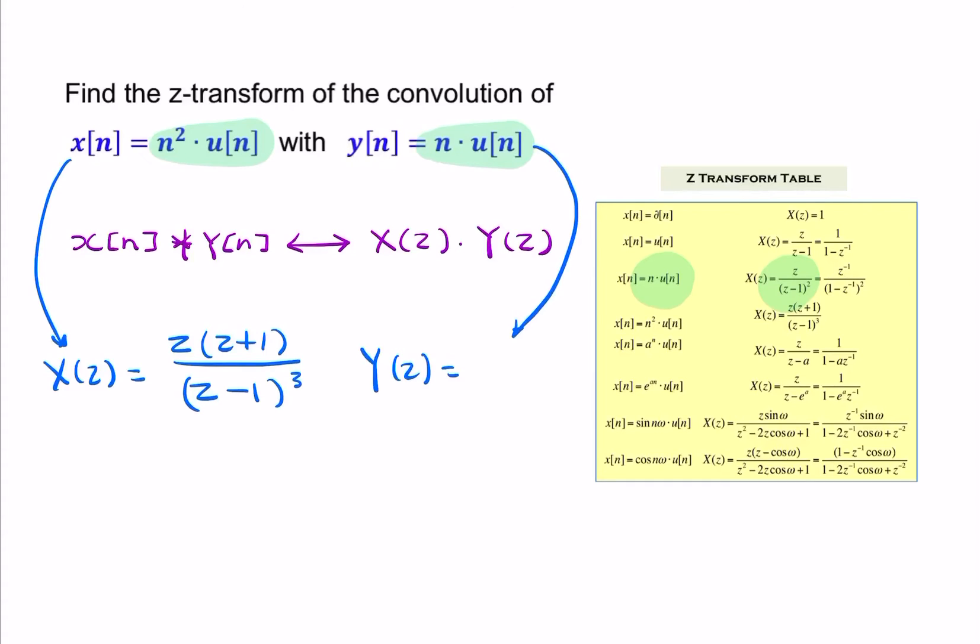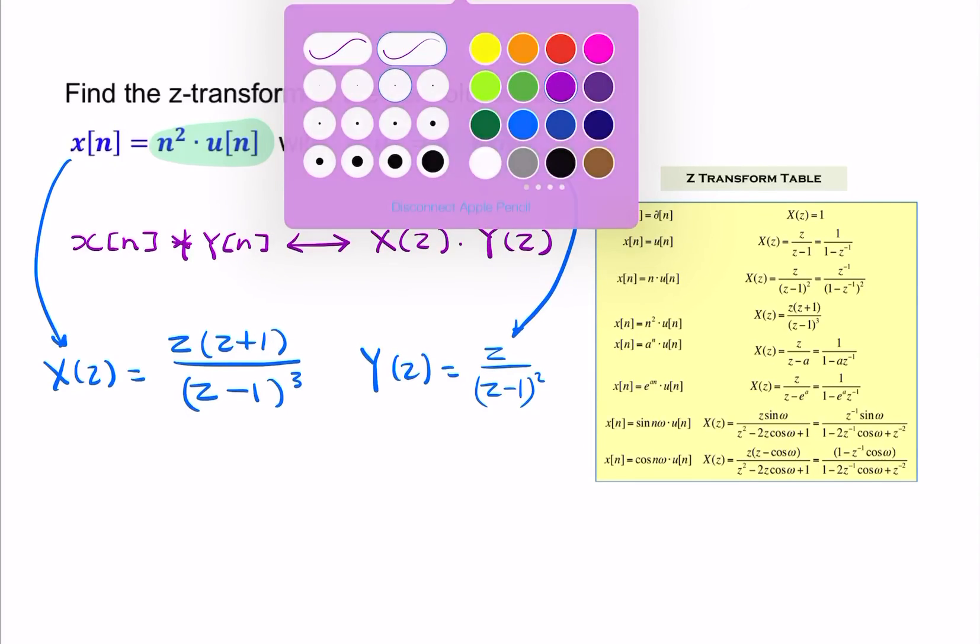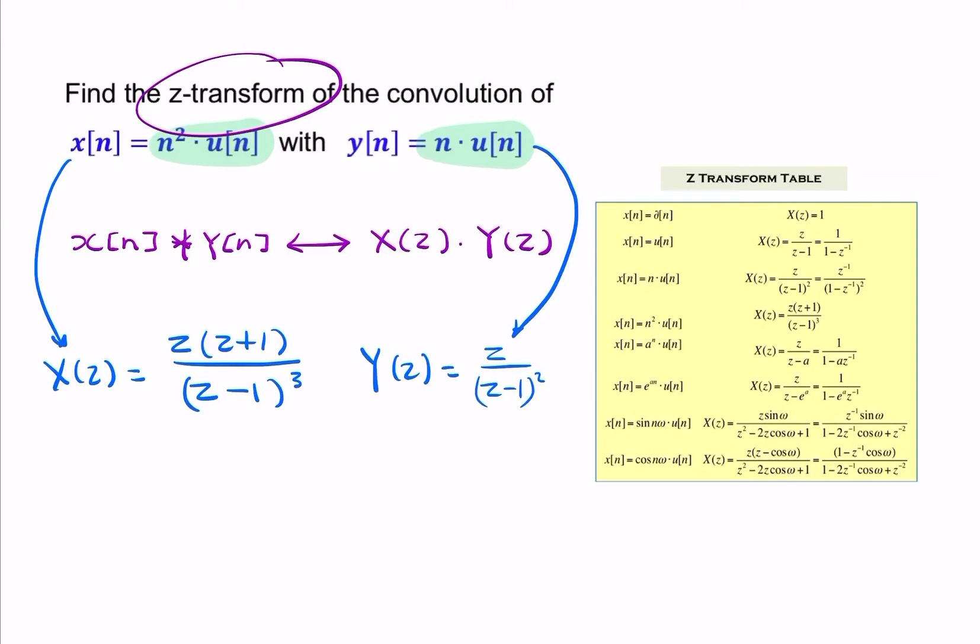The Z-transform is Z over (Z minus 1) squared. That's what we're after: Z over (Z minus 1) squared. Now we've found X and Y, we go back to the question.